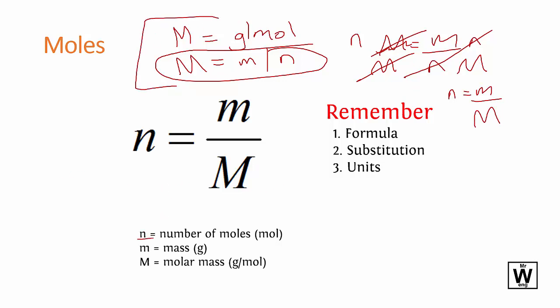Just to reiterate: little n means number of moles in moles, little m means mass in grams, and big M is molar mass in grams per mole from the periodic table. You need to know those things. A general reminder: formula, substitute, units for everything in chemistry. And this should be labeled as n in brackets of what the actual element is.